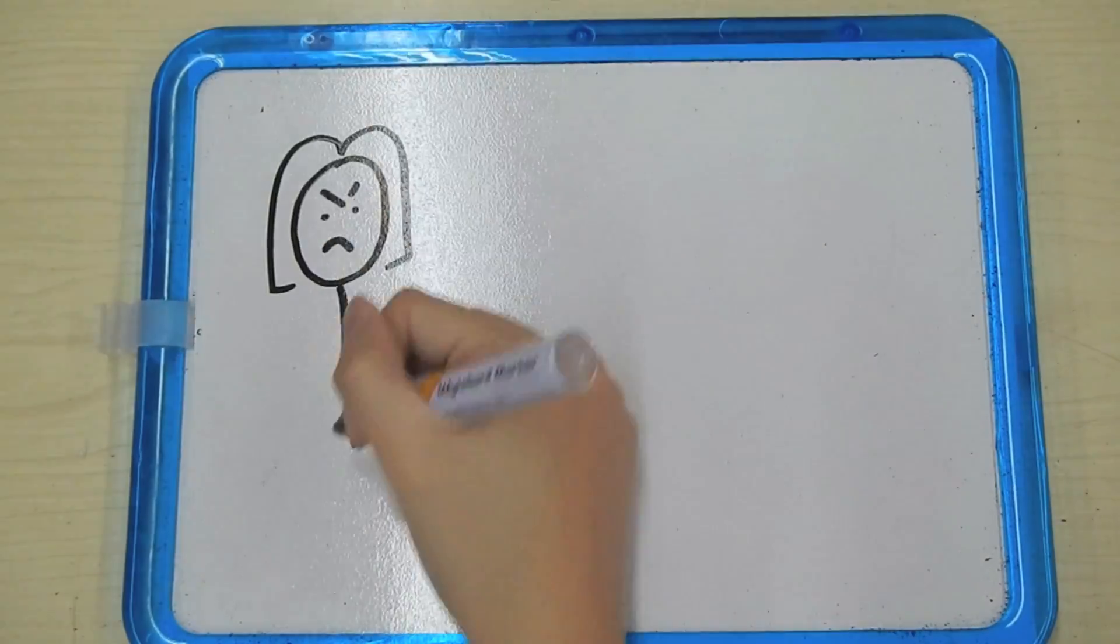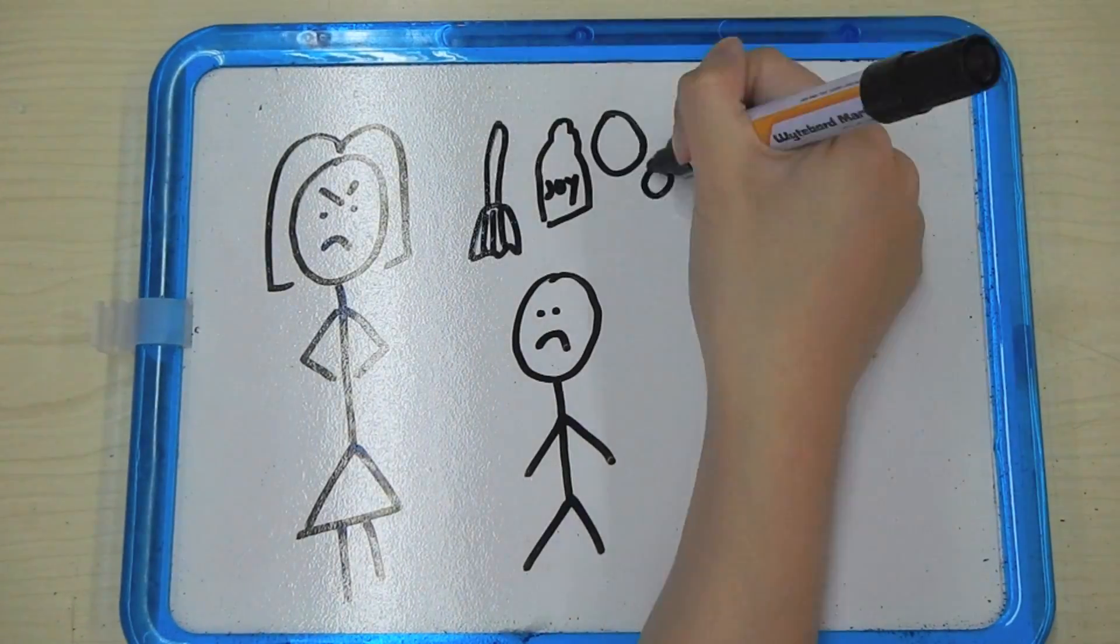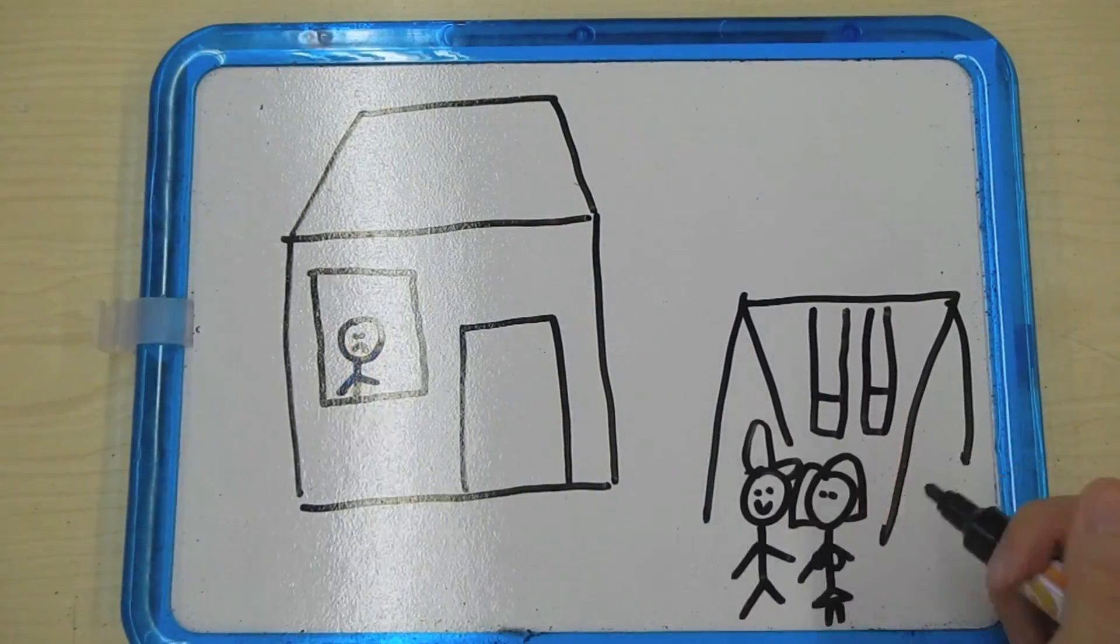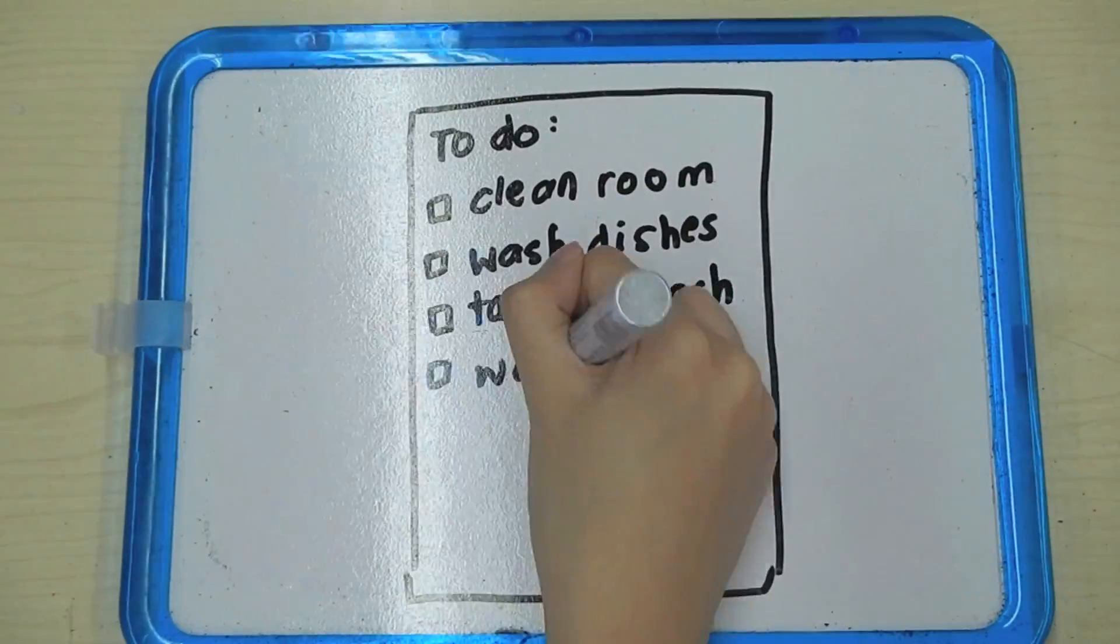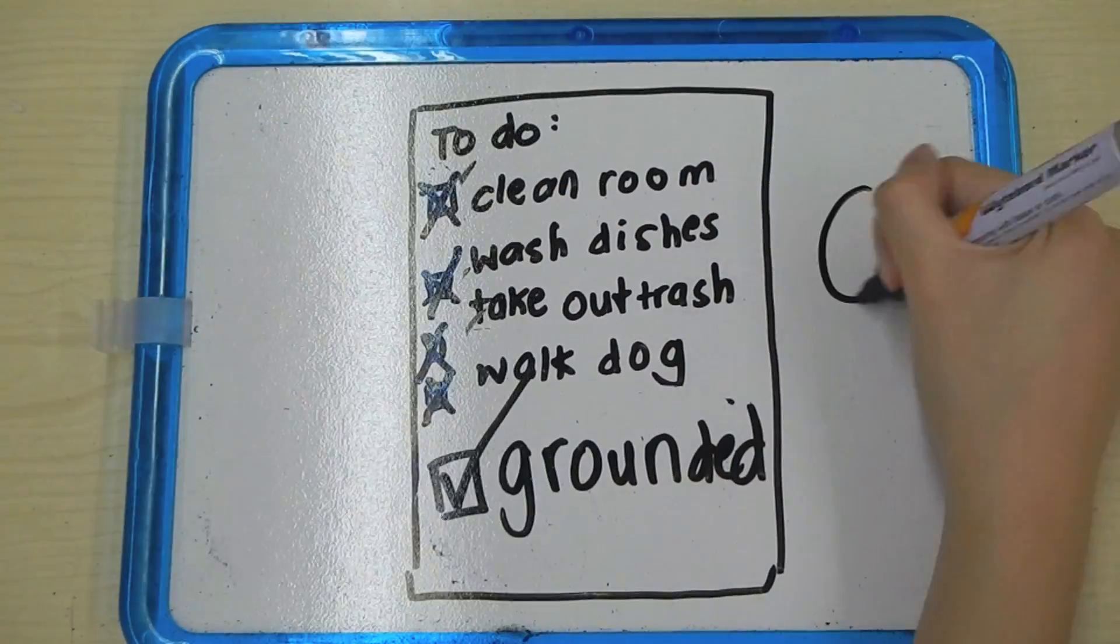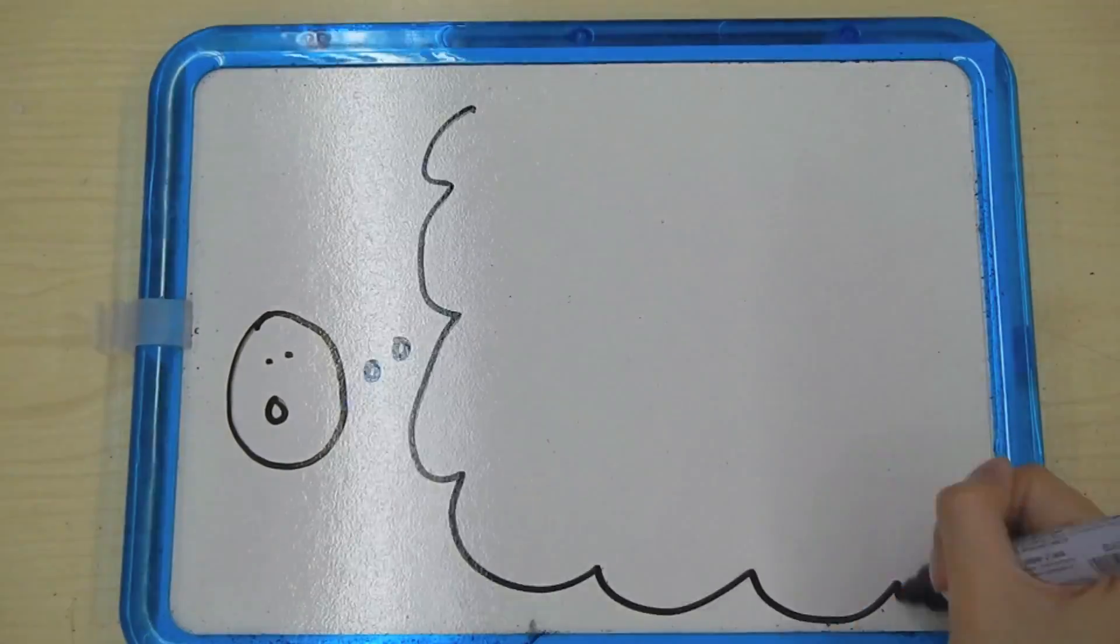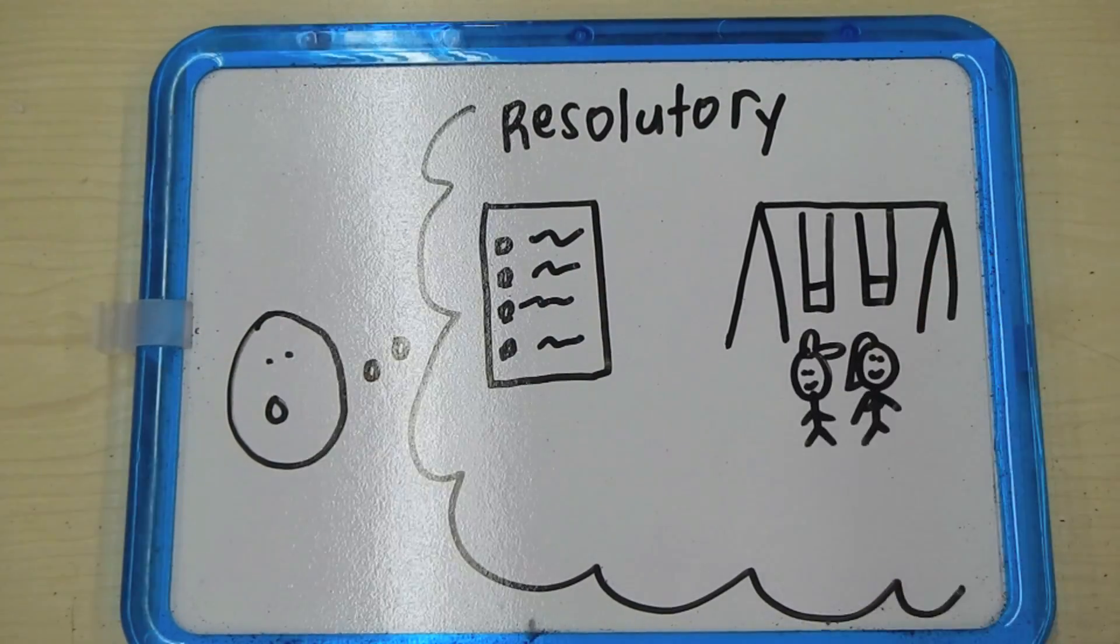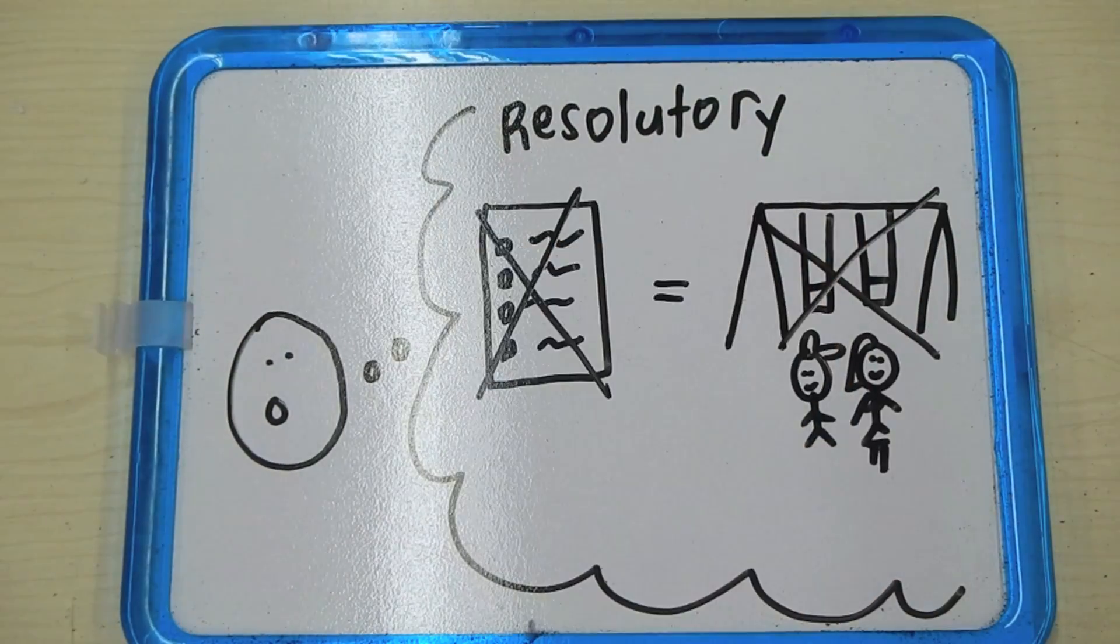My other example demonstrates a resolutory condition. "If you don't do your chores, I won't let you out of the house." As long as I keep doing my chores, my mom would let me out, but once I stop, I'll be grounded. The resolutory condition here, which extinguishes my mom's obligation of letting me out every weekend, is my failure to finish my chores.